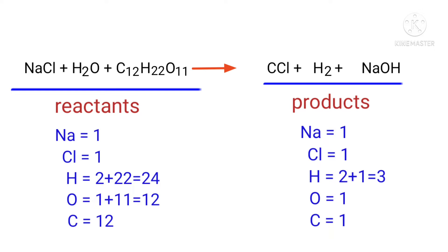On the products side there are 1 sodium atom, 1 chlorine atom, 3 hydrogen atoms, 1 oxygen atom, and 1 carbon atom. The number of atoms are not balanced on both sides.